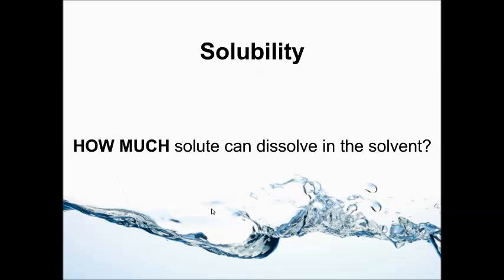Something could be really soluble — it would have high solubility — or something could be not very soluble, it would have low solubility, meaning you can't dissolve a whole lot of it. Solubility is just how much solute can be dissolved in a given solvent. Usually the solvent is water, and the solute is usually some sort of salt, or it could be sugar.